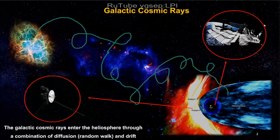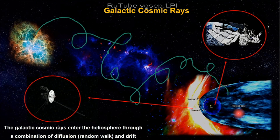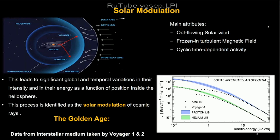As we know, galactic cosmic rays are mainly originated from galactic sources like supernova remnants. Voyager has reported and measured fluxes for protons outside the heliosphere, and experiments like AMS and PAMELA measured inside the heliosphere close to Earth. Once cosmic rays enter the heliosphere, they interact with the magnetic field and solar winds, causing significant global and temporal variation in their intensity as a function of space, time, and energy. This is called solar modulation.